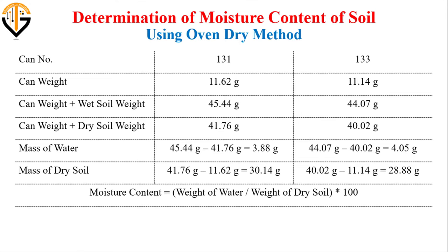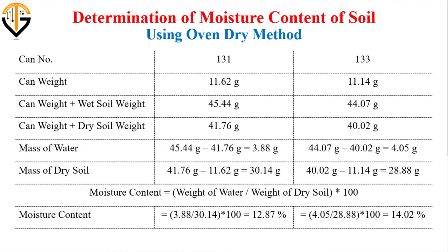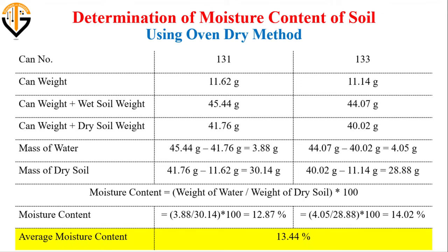As we know, moisture content equals the weight of water divided by the weight of dry soil, multiplied by 100. Using this formula we can determine the moisture content. Since we have taken two containers, there are two trials, and we take the average of these two trials. The average moisture content comes out to be 13.44 percent.